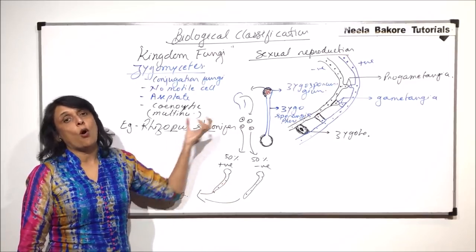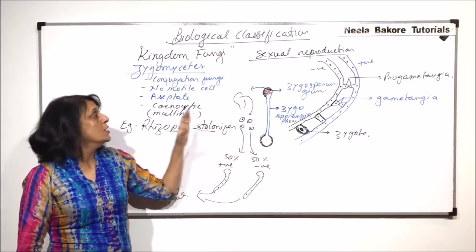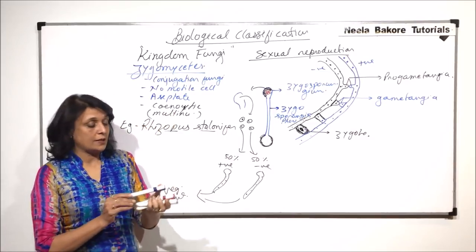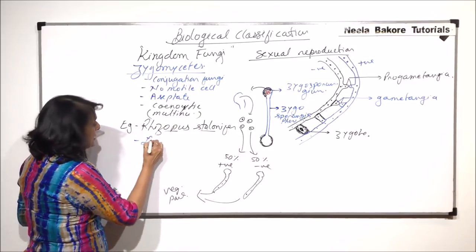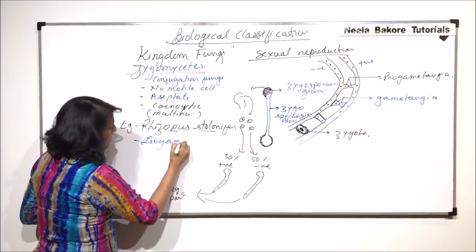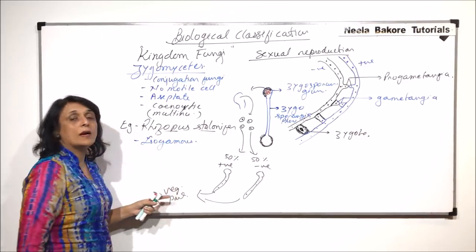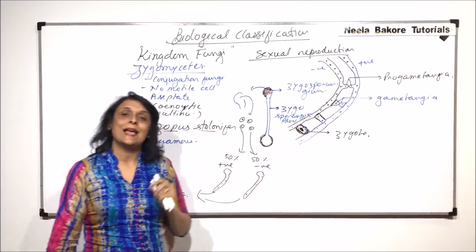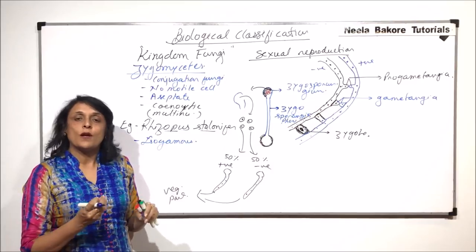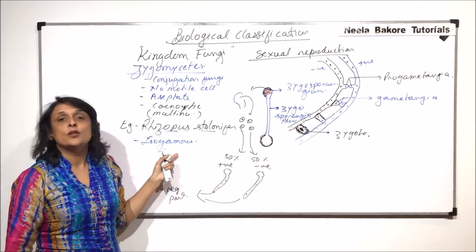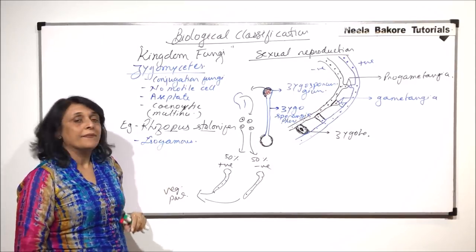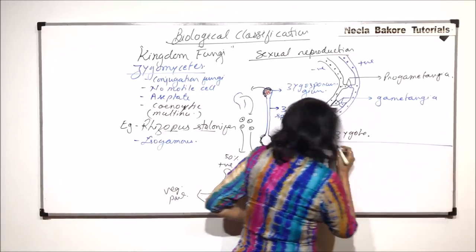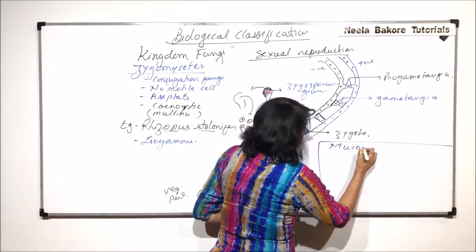So in case of Rhizopus, both sexual and asexual reproductions are seen. It is known as isogamous type. The reason it is called isogamous is because these two structures which are acting as gametes, they are exactly identical morphologically, physiologically. So it is known as isogamous.